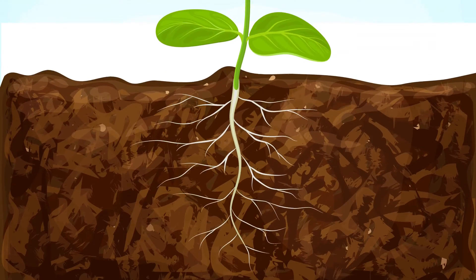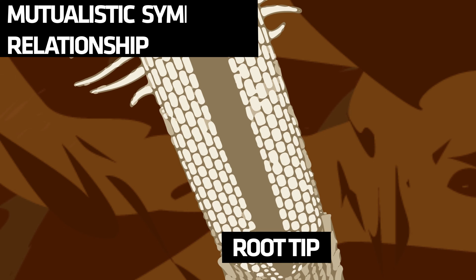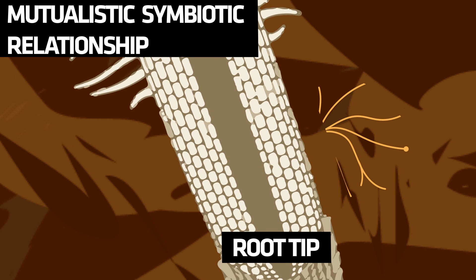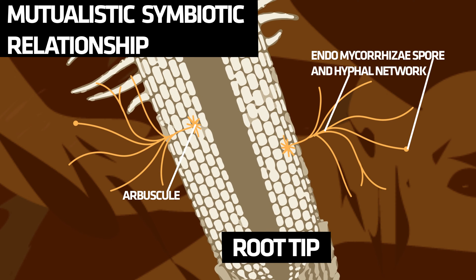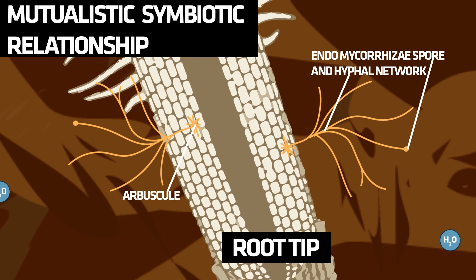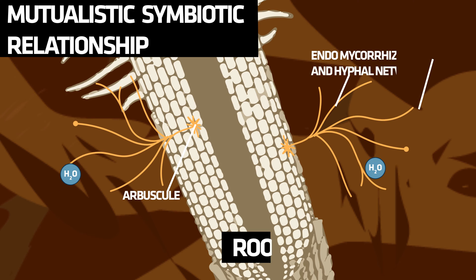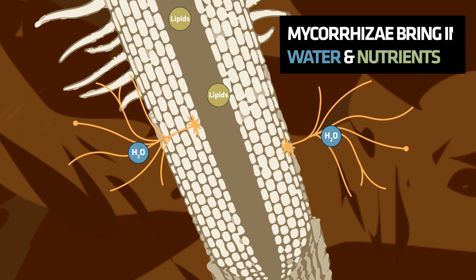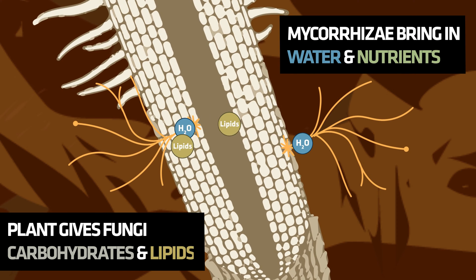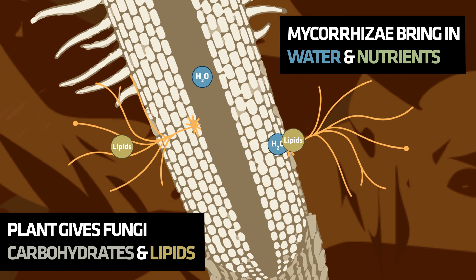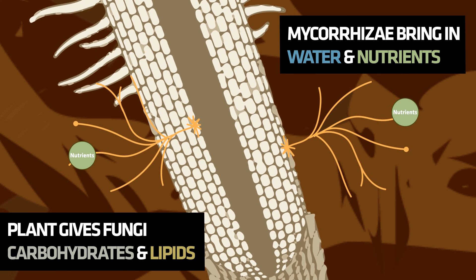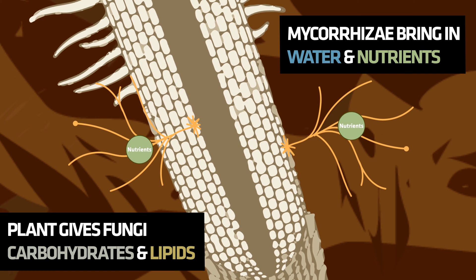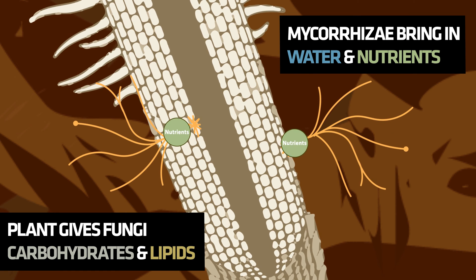Mycorrhizal fungi are a group of organisms that form a symbiotic relationship with plant roots. When we talk about a symbiotic relationship, that really means mutually beneficial. Both the fungi and the plants get something out of this relationship without either suffering.